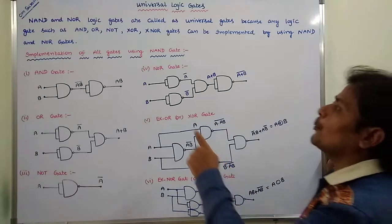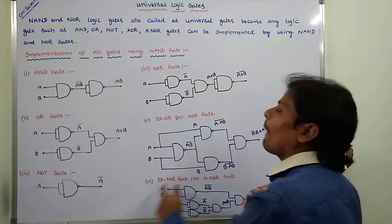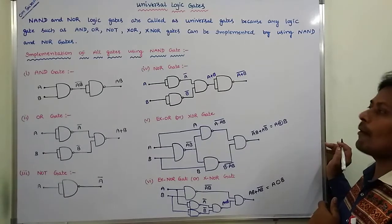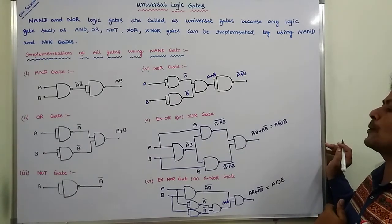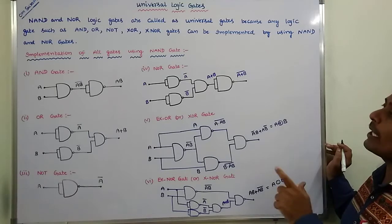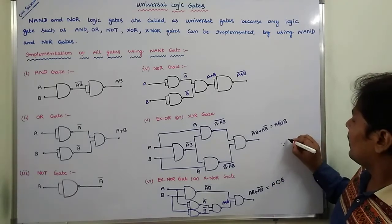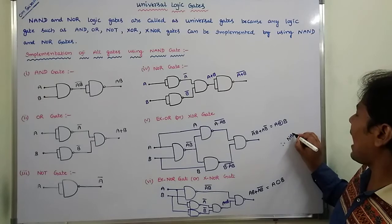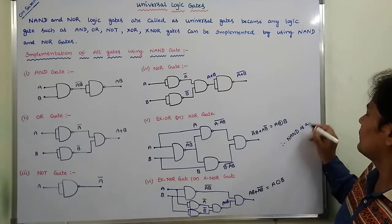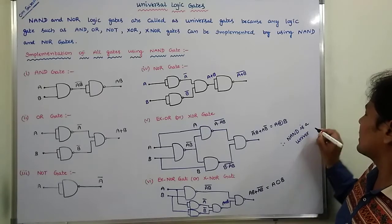In this way, by using the NAND gate, we are implementing all gates: AND gate, OR gate, NOT gate, NOR gate, exclusive OR gate, exclusive NOR gate. Hence, we can say that NAND is a Universal Gate.